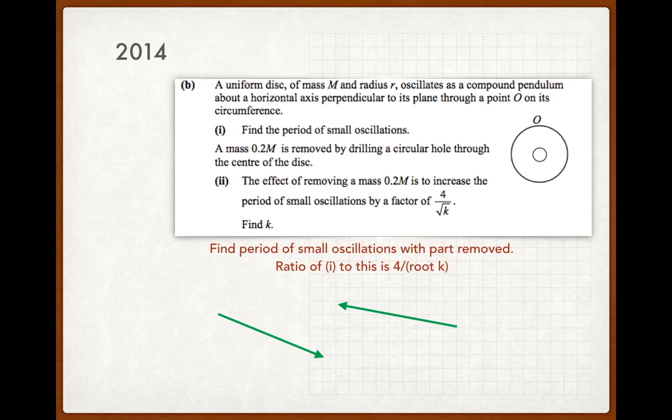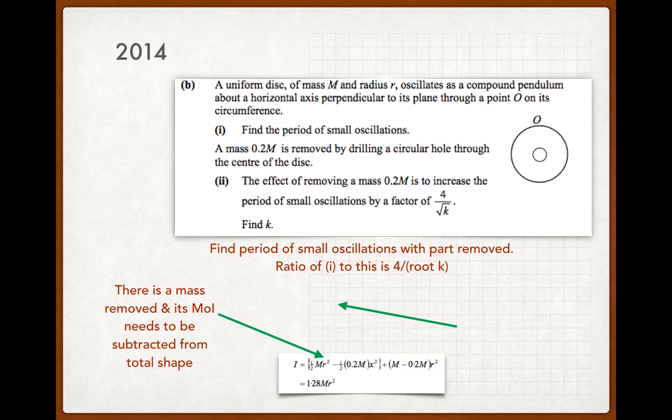So the first thing we need to do is, because there's a mass removed, its moment of inertia needs to be subtracted from the total shape. So the moment of inertia originally was ½mr² plus mr² using the parallel axis theorem, and because we're cutting out the shape in the middle, we need to subtract the moment of inertia of that shape. So that's the minus ½(0.2m)x², x being the radius of that shape cut out. And then in the parallel axis theorem when we're shifting it through md², we also have to remove 0.2m there because of the decrease in mass.